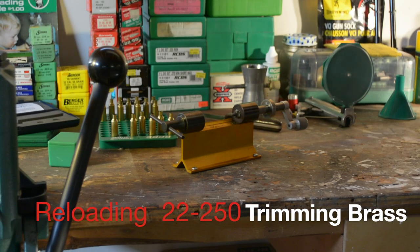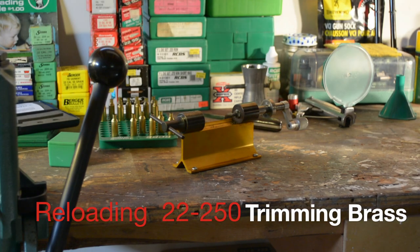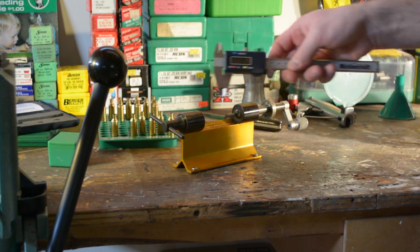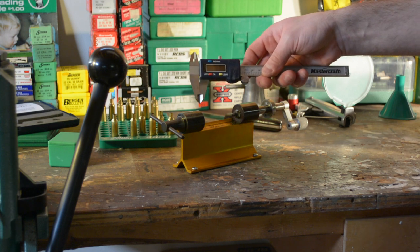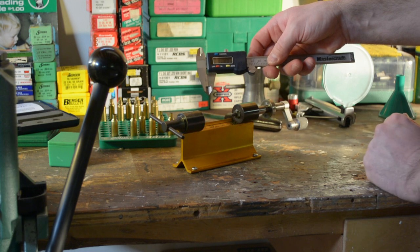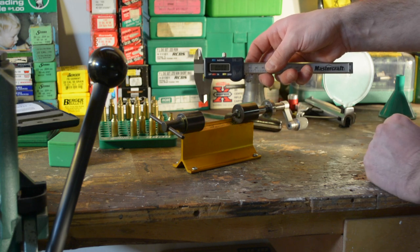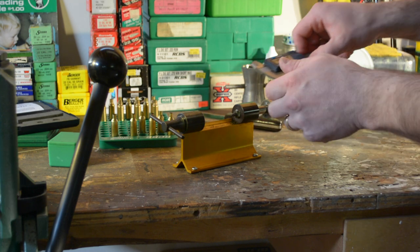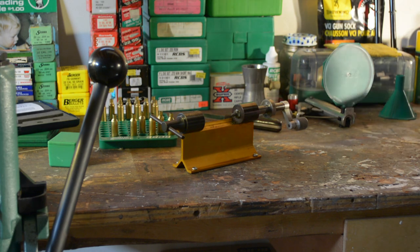When I'm reloading, I need to get my cases all at the same length. I do that by using one of these - this is a digital caliper. You can see that when I turn it on and the jaws are together, it is at zero, and you refer to your reloading manual.